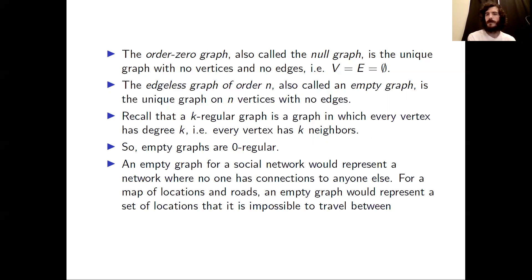In a social network context, an empty graph would represent a network where no one has connections to anyone else — a very useless social network. If the graph represents a map of locations with roads, an empty graph would represent a set of locations for which it is impossible to travel between any two of them.